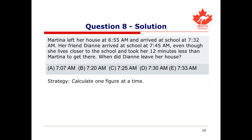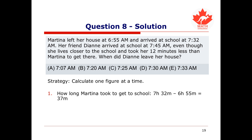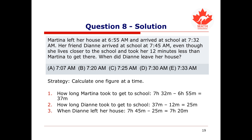Let's do this three-part question one step at a time. Step one: calculate how long Martina took to get to school — 7:32 minus 6:55 equals 37 minutes. Step two: calculate how long Diane took — 37 minutes minus 12 minutes equals 25 minutes. Step three: calculate when Diane left her house — 7:45 minus 25 minutes equals 7:20, which is option B.